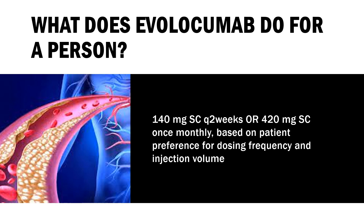When switching dosage regimens, administer first dose of new regimen on the next scheduled date of the prior regimen. Homozygous familial hypercholesterolemia (HoFH): Indicated as an adjunct to other LDL-lowering therapies to reduce LDL-C; dose is 420 mg SC once monthly. May increase to 420 mg every 2 weeks if a clinically meaningful response is not achieved in 12 weeks. Patients on lipoprotein apheresis may initiate treatment with 420 mg every 2 weeks to correspond with the apheresis schedule; administer evolocumab after completing the apheresis session.